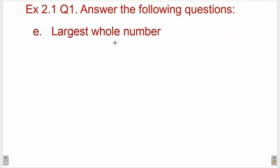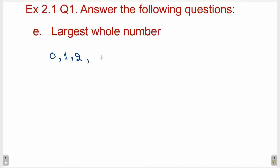Largest whole number. Smallest whole number क्या है हमारे पास? 0. अब next whole number हम लोग कैसे find out करते हैं? 0 में 1 add कर दो, तो हमारे पास next whole number आ जाएगा। अब 1 में again 1 add कर दो, we will get the next whole number। So जो भी हमारे पास whole number हो उसमें अगर हम लोग 1 add कर देंगे, we will get the next whole number. So यहाँ से conclusion क्या निकलता है कि largest whole number is not possible, क्योंकि आपके पास कितना भी बड़ा whole number हो, आप उसमें अगर 1 add कर दोगे, you will get the next whole number. So therefore, largest whole number is not possible.